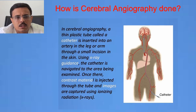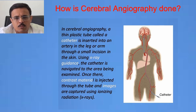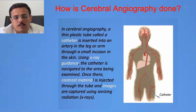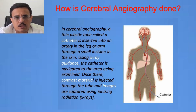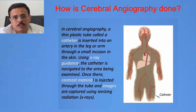So how is it done? In cerebral angiography, a thin plastic tube is inserted through the leg blood vessel through a very small incision in the skin, and under x-ray guidance it is taken to the area to be examined. We then inject dye — which we call contrast material — through this catheter, and the images are captured using the ionizing radiation of x-rays.